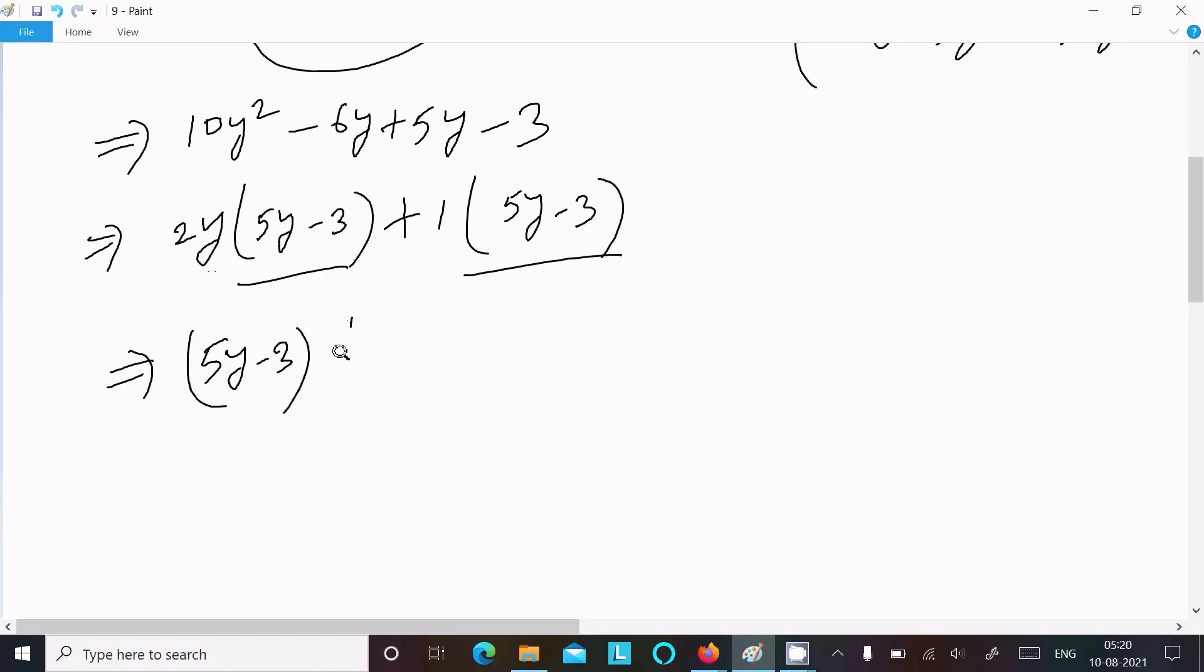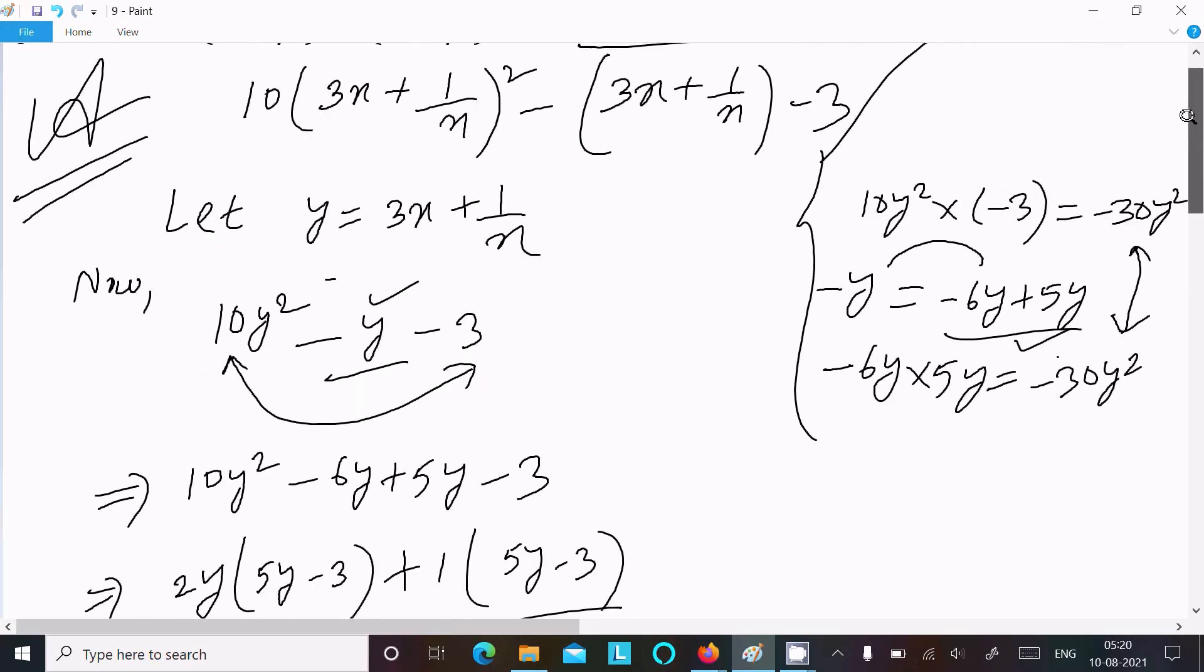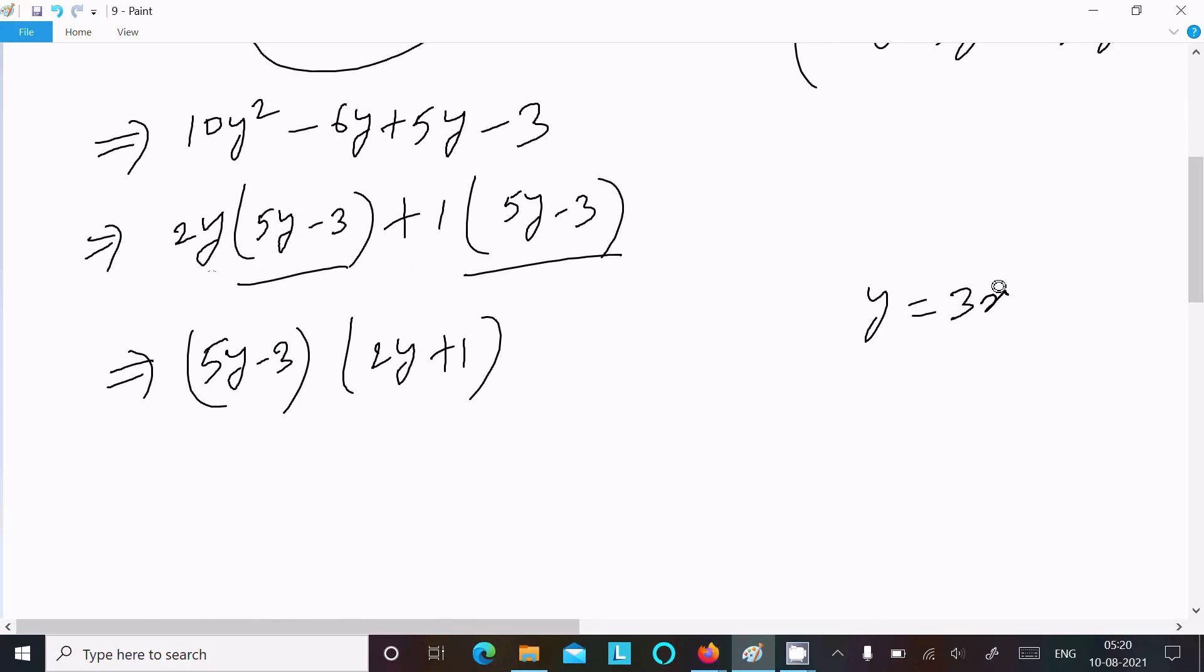Now here you get 2y plus 1. So this is here y form. Now y that I assume 3x plus 1/x.